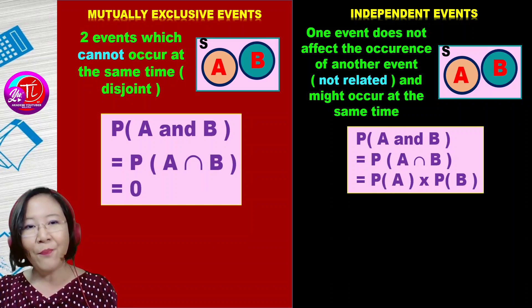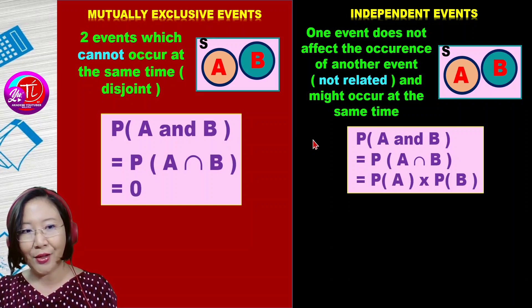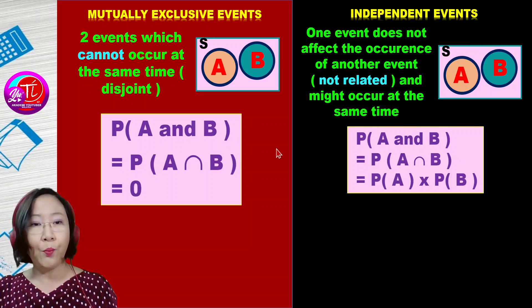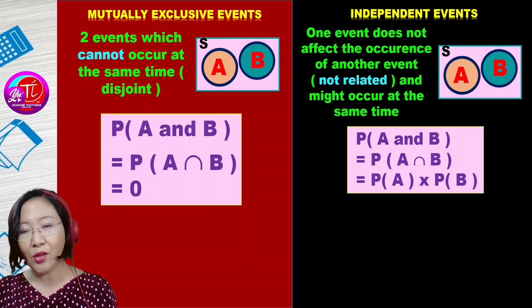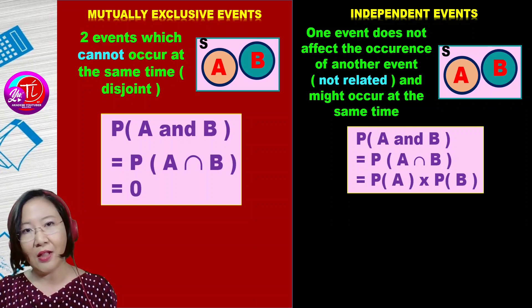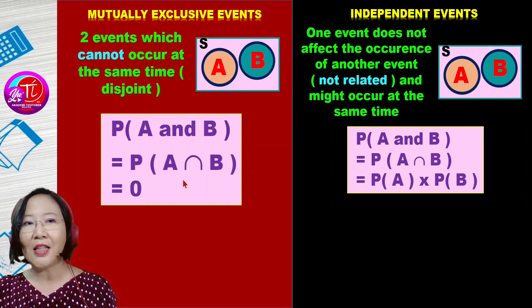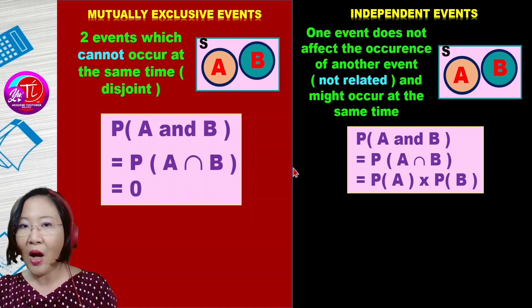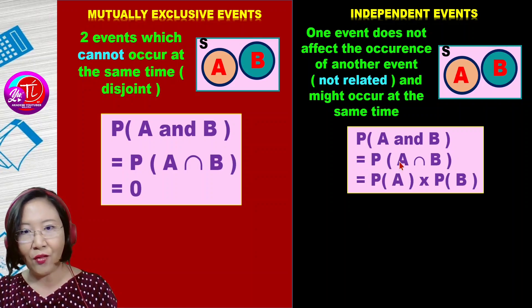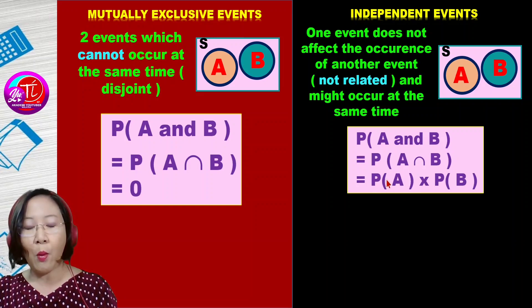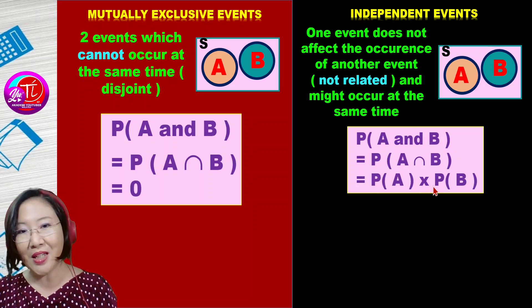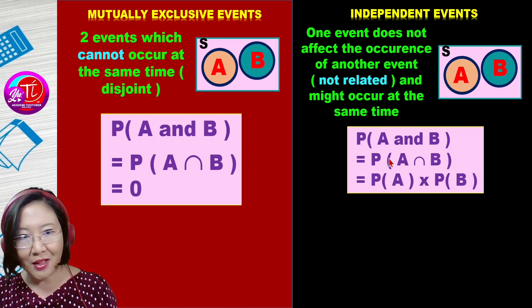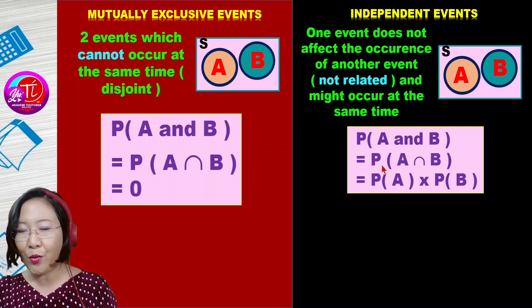When you do your exam question, you have to be careful which formula to use. Sometimes they will ask you to prove whether an event is a mutually exclusive event or an independent event. To prove mutually exclusive, the intersection of the events is definitely zero. For independent events, you calculate the value of A intersect B, and when you calculate probability of A multiplied by probability of B, you will get the same answer as A intersect B. So this is one way you can prove independent events.